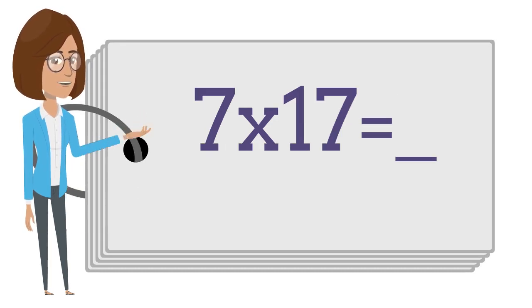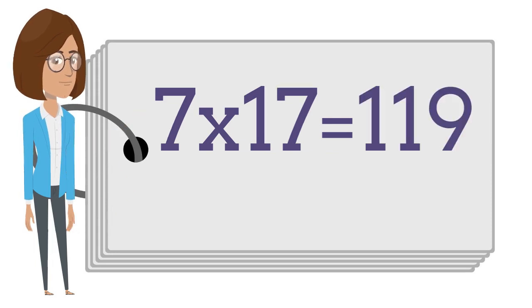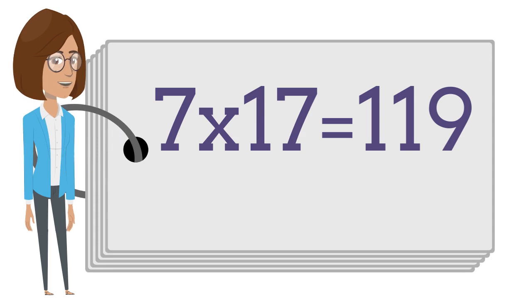7 times 17 is — say the answer out loud. 7 times 17 is 119.